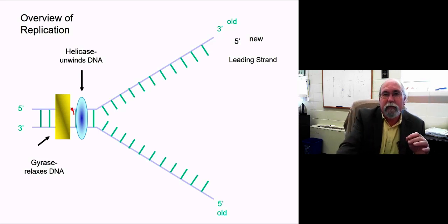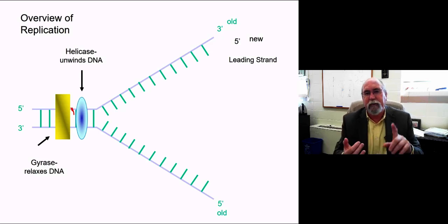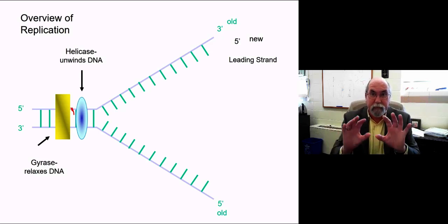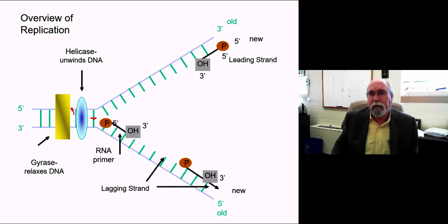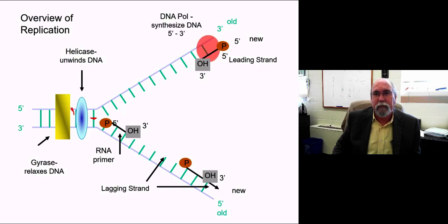Helicase unwinds the DNA. How does it do that? It does it by breaking these hydrogen bonds in here. And again, all these gyrase, the topoisomerase of gyrase, helicase, they're complexes. We're just going to give them a single name now to help us understand the process. You have to have primers put down. Those primers are put down by primase.